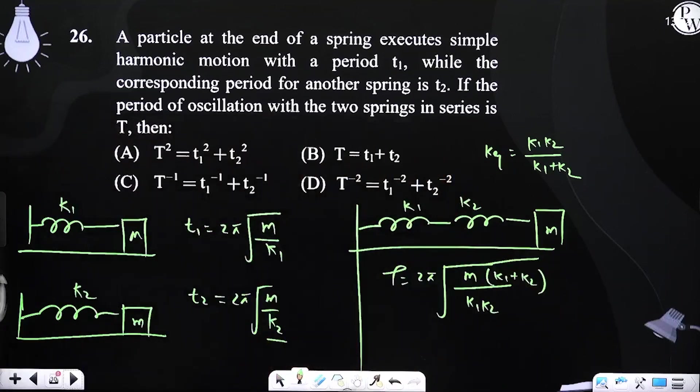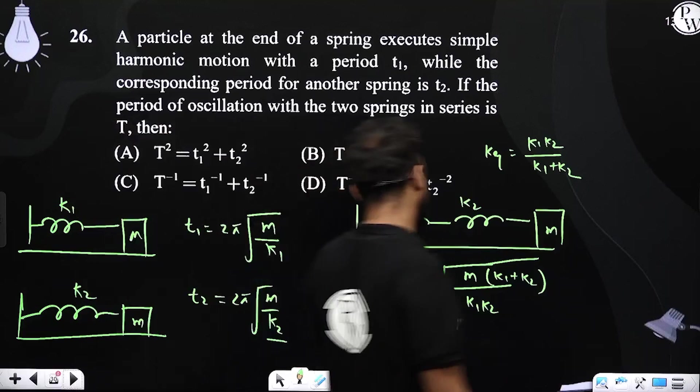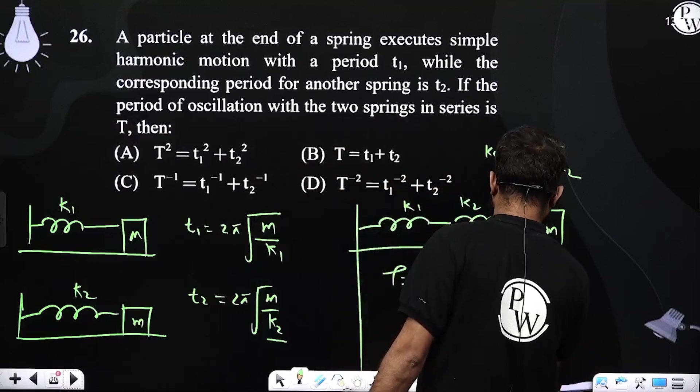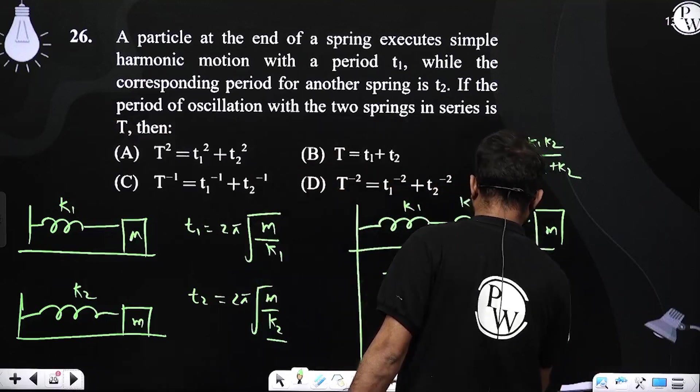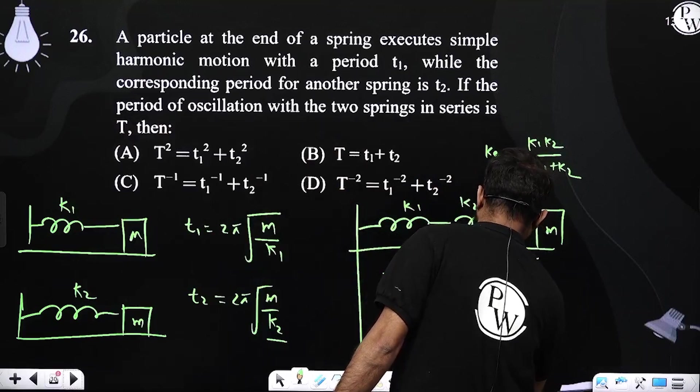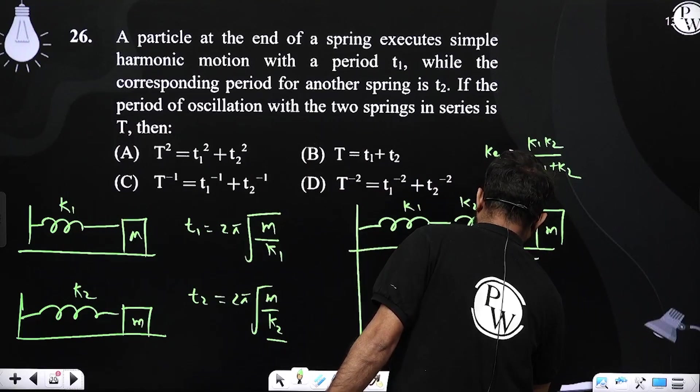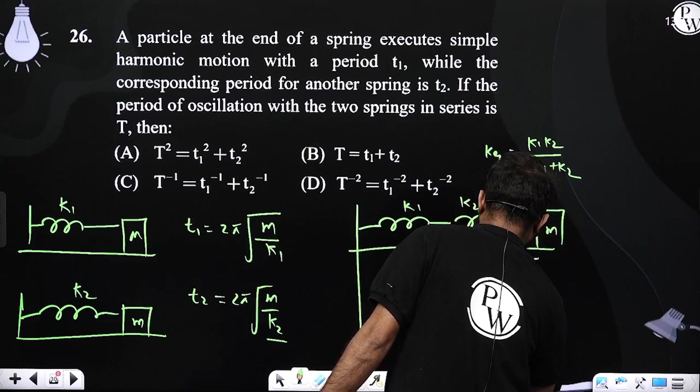हम से पूछा गया है कि इन में से कौन सा relation इसको best describe करता है. अगर हम यहां पर इसको basically directly भी लिखना चाहें, तो यहां लिखने में ज्यादा अच्छा में महसूस होगा, m upon 1 upon k1 plus 1 upon k2.